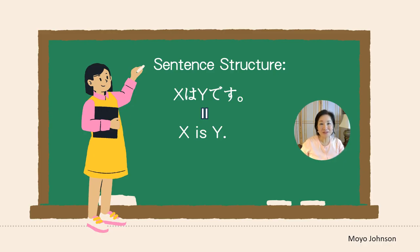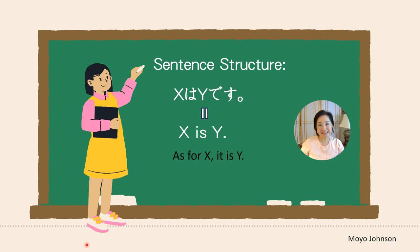Your very first Japanese sentence structure is this: X は Y です. And it means X is Y. The literal translation for this sentence is: As for X, it is Y.